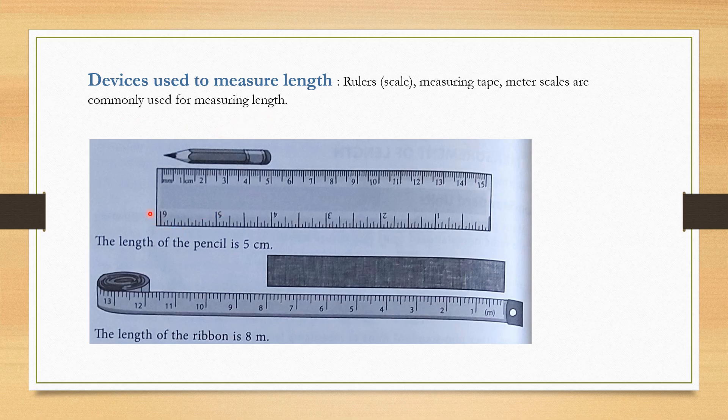Let's see here we have one scale and we have a pencil. The length of pencil here is 5. We have one ribbon here and one measuring tape here. Length of the ribbon here is 8 meter.